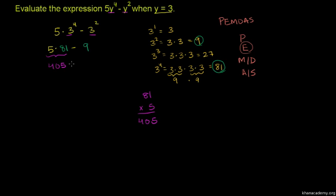So 405 minus 9. Subtracting 9 from 405, we get 396. The answer is 396.